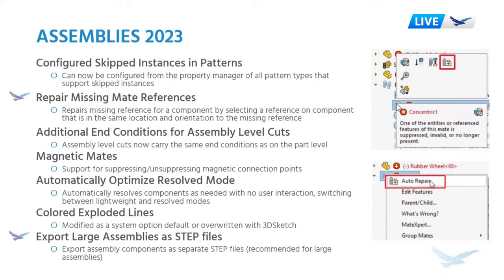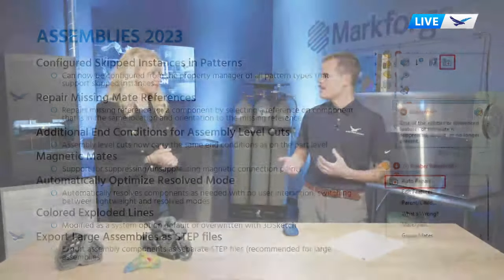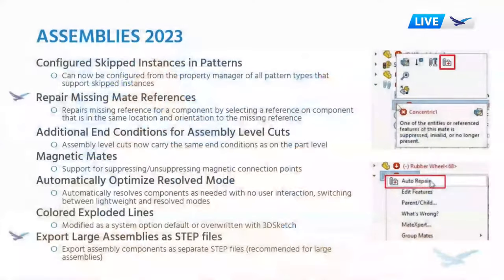The other thing we were really excited about is the automatically optimized resolve mode — it's able to automatically switch between lightweight mode and resolve mode instead of us manually changing it over, and it's also improved performance for loading large assemblies. That's a big one. We found that opening files in SolidWorks 2023 increased speed by 150%, which is a pretty major number. And you can now also save individual part files as step files within an assembly — in the past, you could only save the entire assembly as a step file.